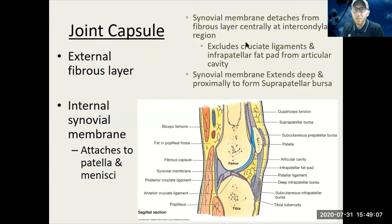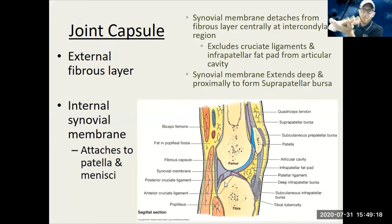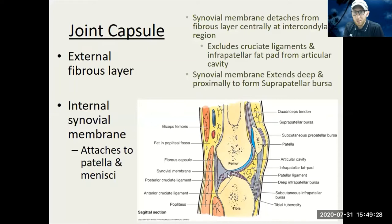The external and internal joint capsule surrounds the knee. We get a lot of hyaline cartilage in the knee joint as well as a synovial membrane giving it a little bit of cushion. You've got a lot of weight coming down from the hips but also a lot of force coming up from the tibia, so it's a very important joint.